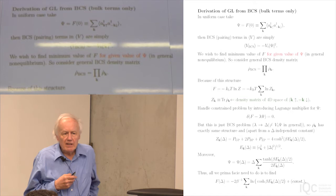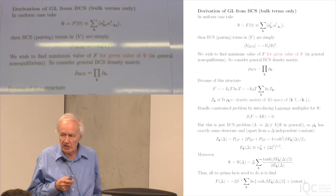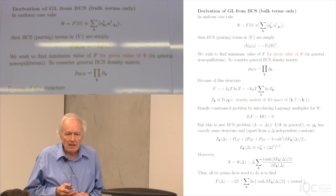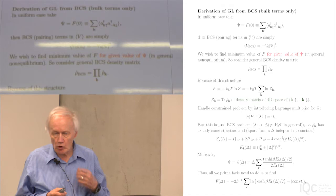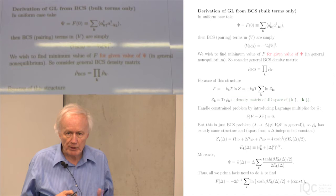Why might you be interested in this kind of situation? The BCS theory, at least in its simple form, just deals with a uniform, effectively infinite bulk superconductor. In real life you don't usually have that — you always have some boundary of a sample, and there may be constraints the order parameter has to satisfy at the edge. So BCS theory in its original form won't go through, whereas the Ginzburg-Landau theory has a relatively simple adaptation to this.